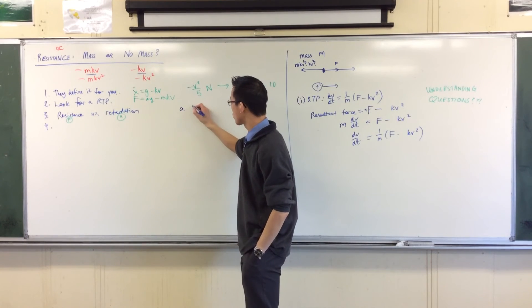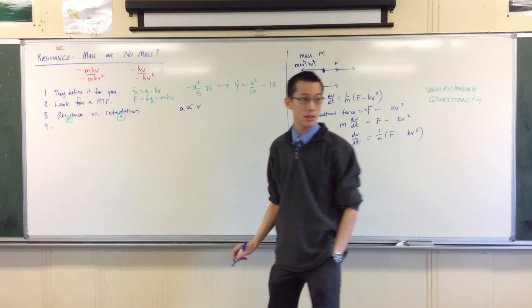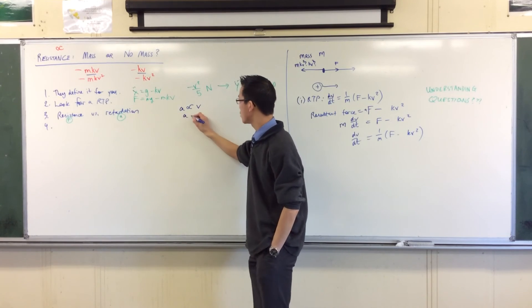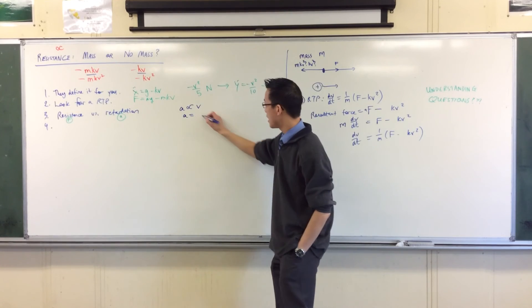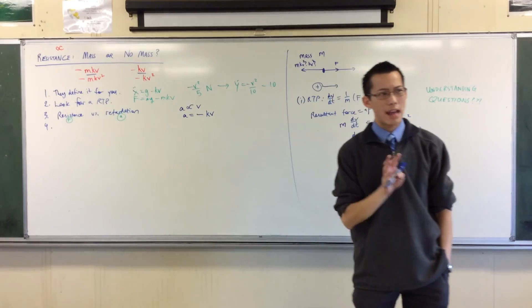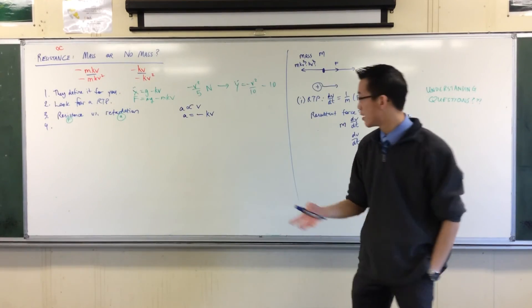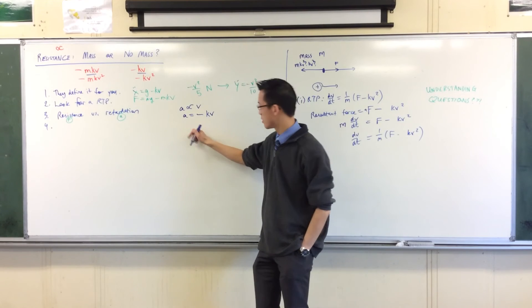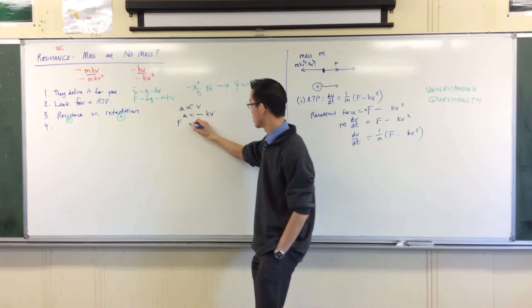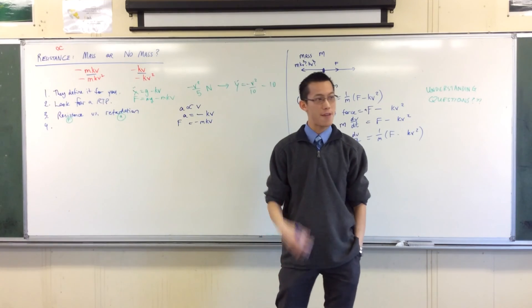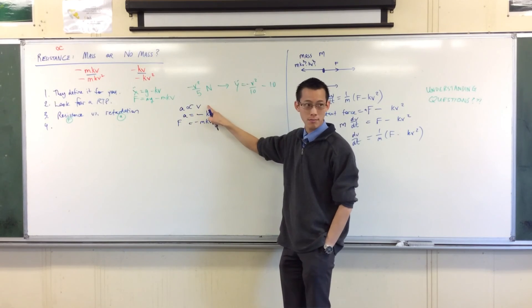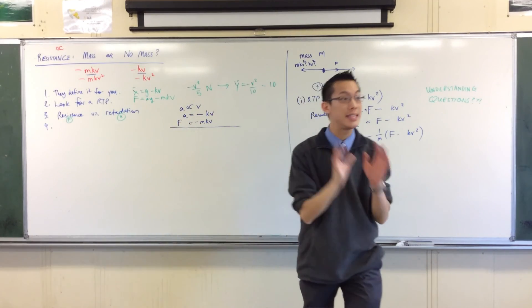If retardation is proportional, that's an acceleration thing, so that means the acceleration is proportional to the velocity. Yes it's retardation so it's opposing, so when I introduce an equation it's opposing and it's proportional. So now if I want to think about the force then, well force is ma, so force would be this times mass, so I get this result if they tell me that retardation is proportional to velocity.